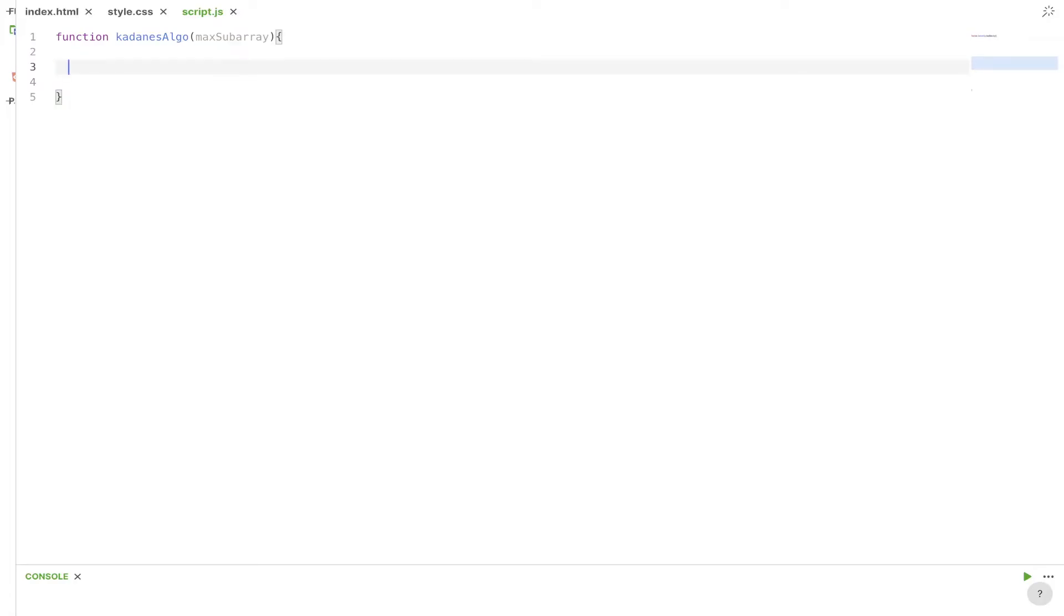Okay, so here we are on the code editor. I've created the function Kadane's algo. Firstly, we need to initialize. So current sum, which is going to be equal to maximum subarray at 0. So we're going to grab the first value within the maximum subarray. Let max sum equal, and that will also be set as the first value within max subarray. And then we just loop through the values of that array.